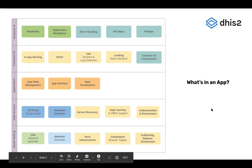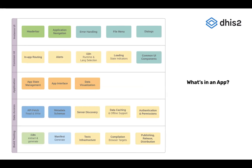This is a representation of a lot of the things that exist within a DHIS2 application: the header bar, translations, I18N, alerts, loading indicators, common UI components, routing, the ability to fetch and write data to the DHIS2 API, access to the schema of metadata for a DHIS2 instance, authentication, caching, generation of a manifest which tells DHIS2 the name of your application and what resources it requires, and the ability to publish and release the application to a DHIS2 instance or to the App Hub.